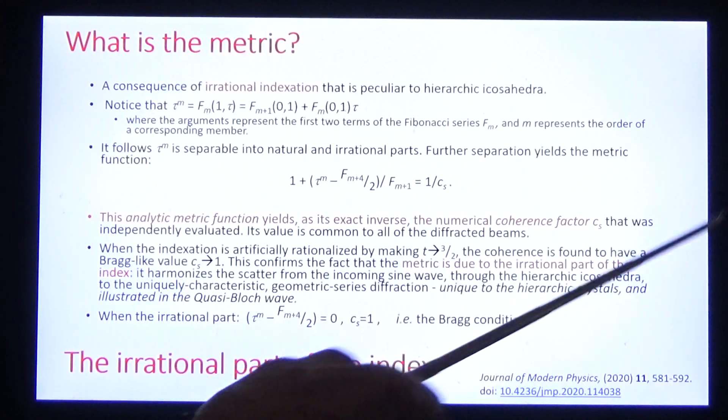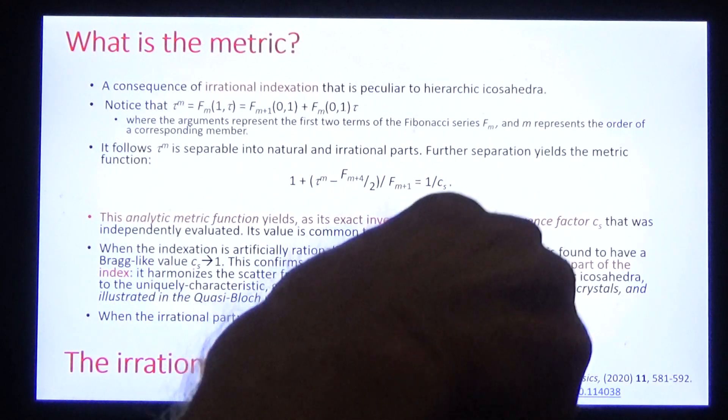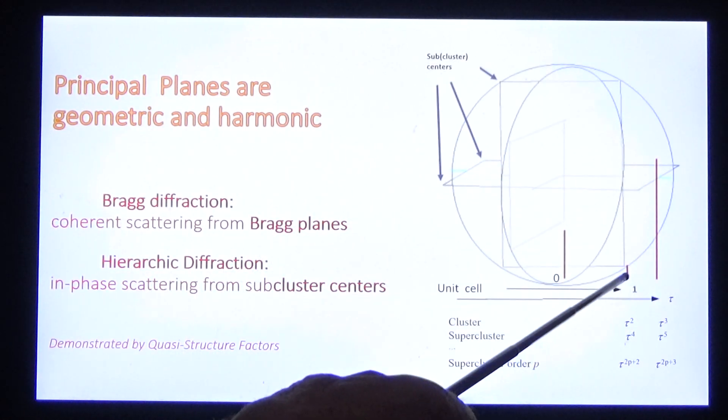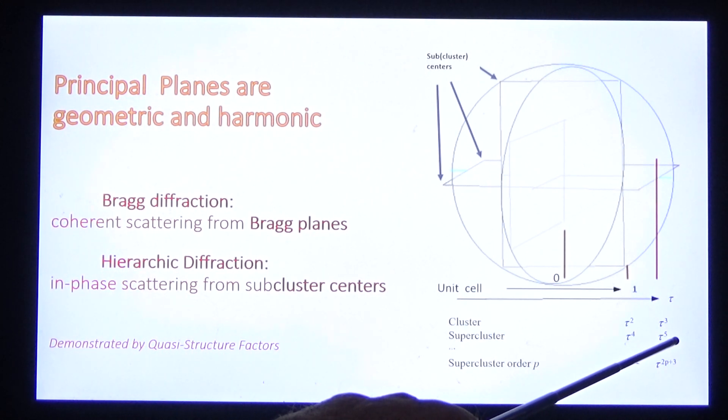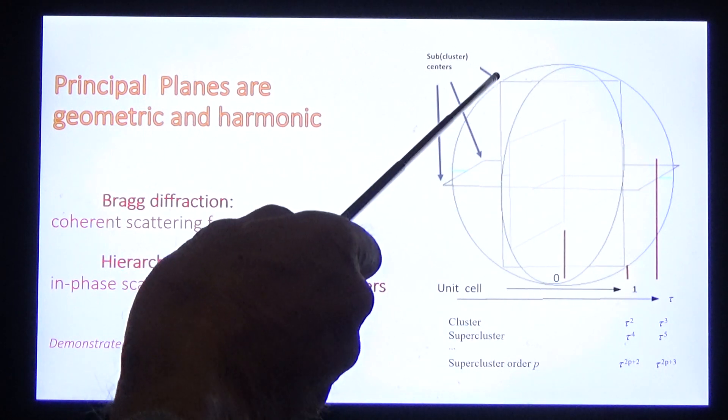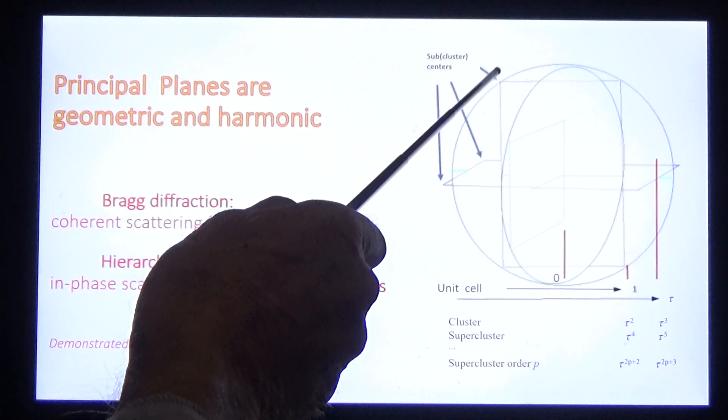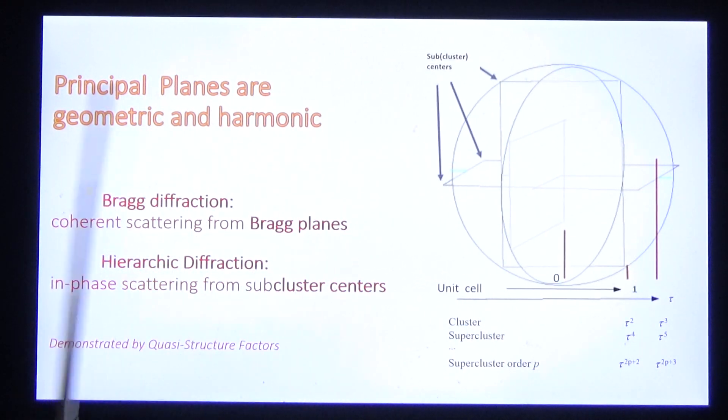And the spacings between these principal planes goes as 1, tau, tau squared, tau cubed, tau to the 4th, tau to the 5th, etc. And the sub-clusters are located on these corners.